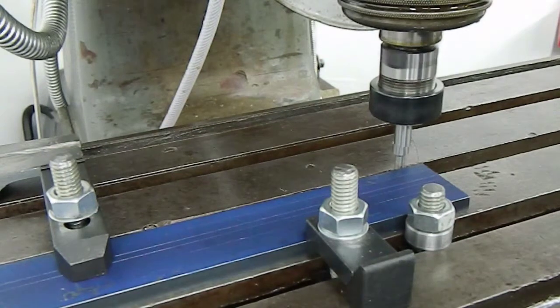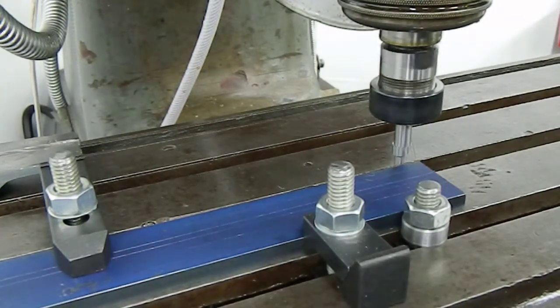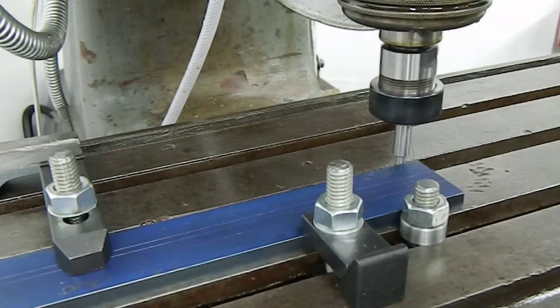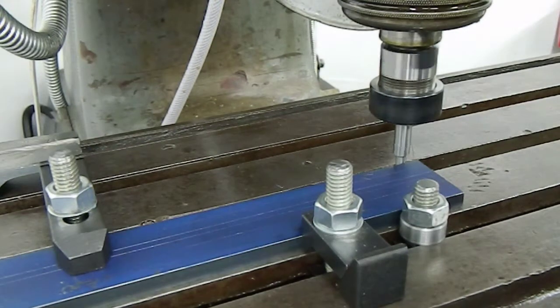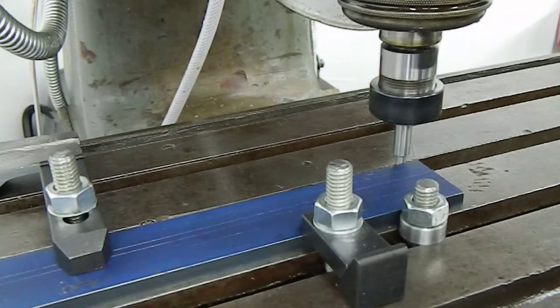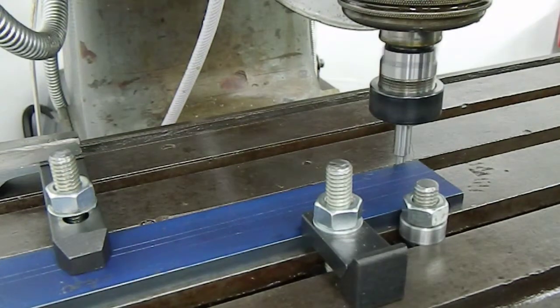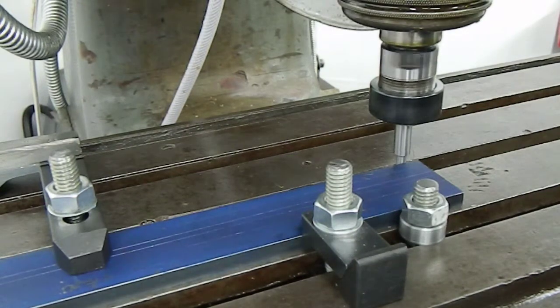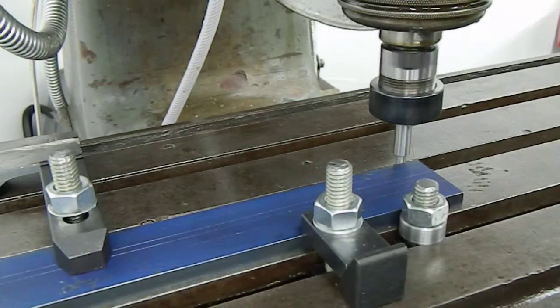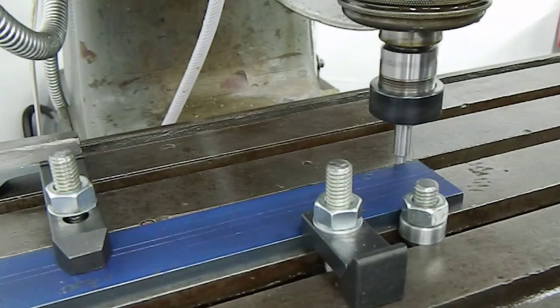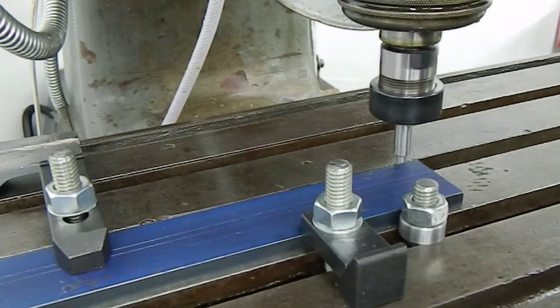We'll take the table, move the table over on the Y axis until we start to contact the edge finder. Just sliding into contact. And as we get closer to that edge finder, when we get to the point where it's spinning through, we'll see the edge finder just ever so slightly kick. It's starting to run through now. Watch for the little kick. There it goes.